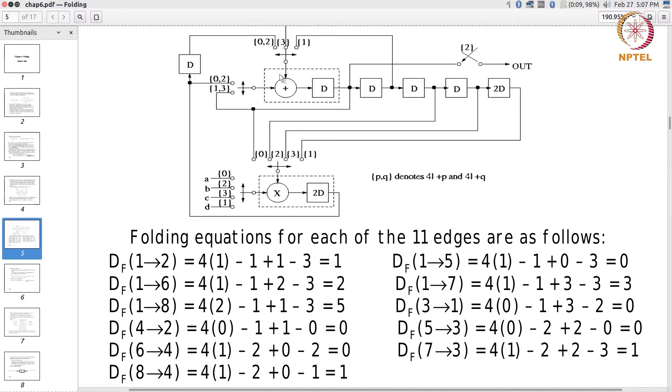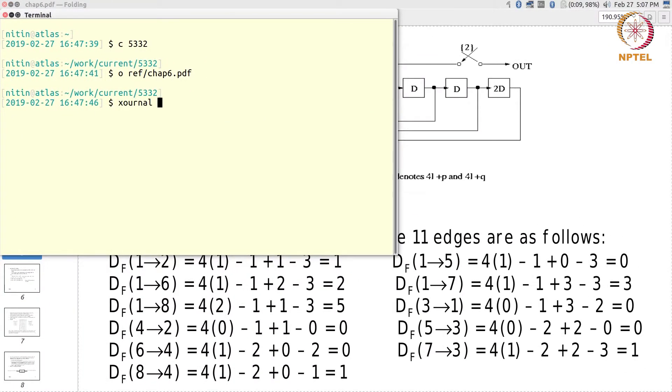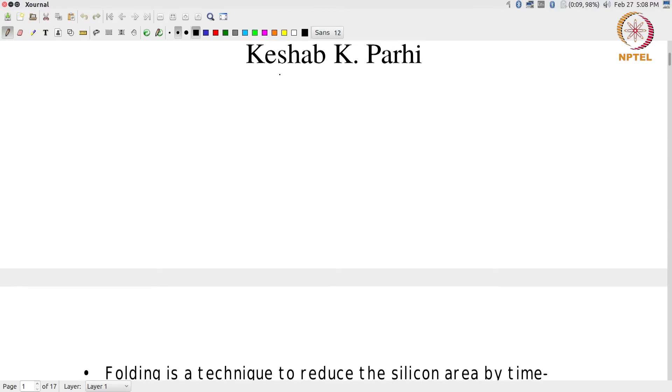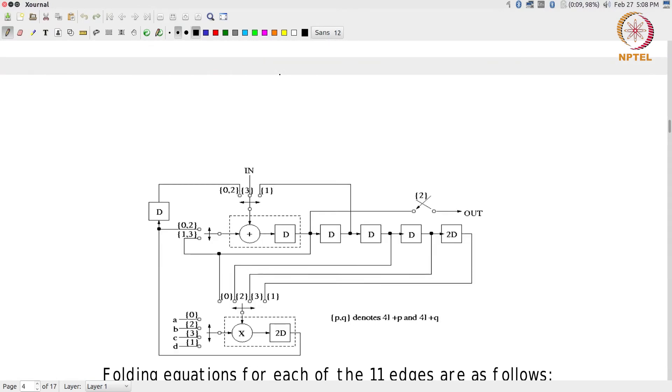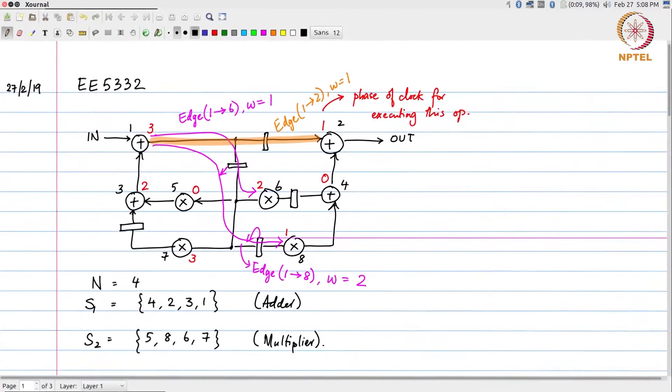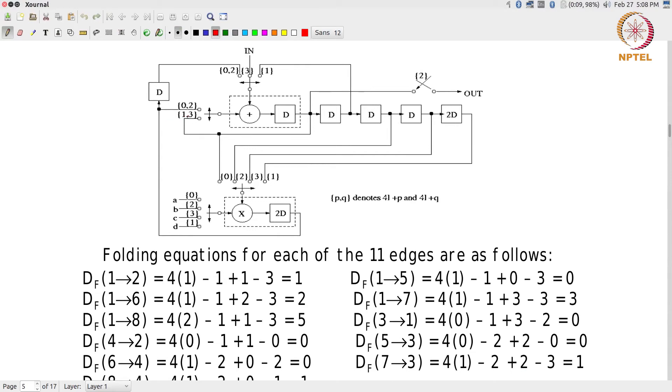What we can see over here is, let us take a look at operation number 2 for example. Operation number 2 is an addition, it occurs at time 1 phase 1 of the clock. That means I should basically be interested in what are the inputs coming to the adder at phase 1.